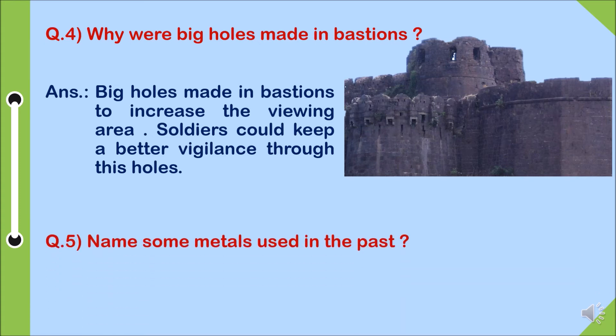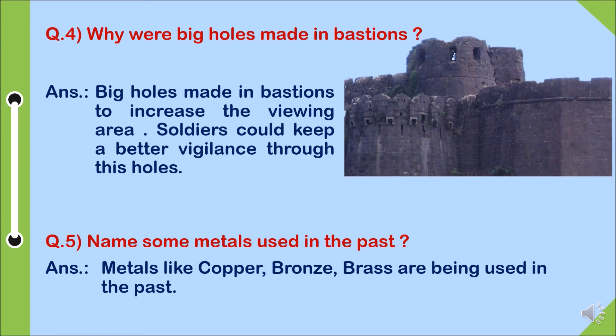Question five, name some metals used in the past. Answer: metals like copper, bronze, and brass were being used in the past.